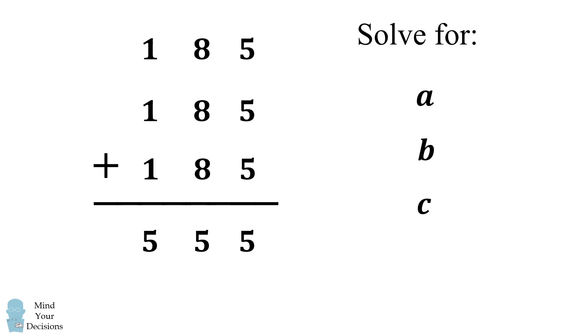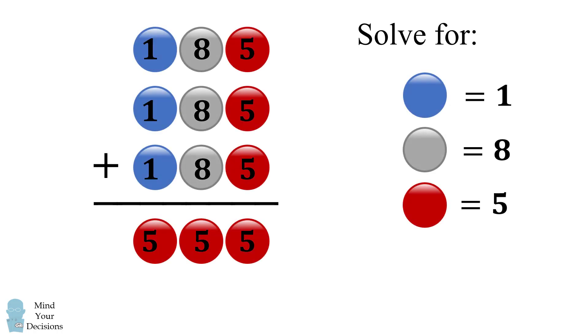So now we'll just go back to our original problem. And this is the answer: The blue circle is equal to 1, the gray circle is equal to 8, and the red circle is equal to 5. Did you figure it out?